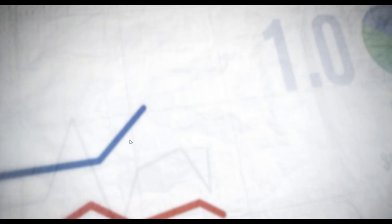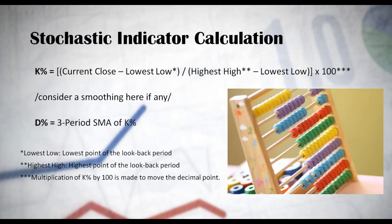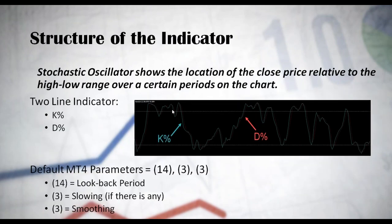Let me get back to show you something. Take a look — we have the two lines that fluctuate between two levels. The upper level is 80 and the lower level is 20, so basically the two lines fluctuate between 100 and 0, where signals are taken above 80 and below 20.